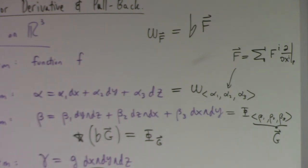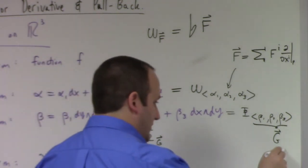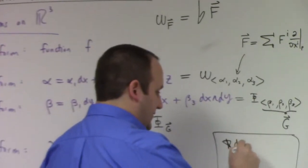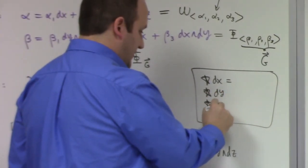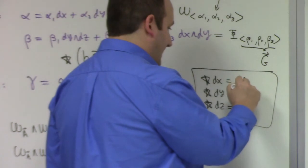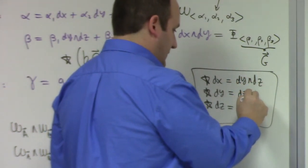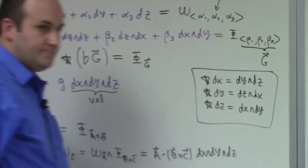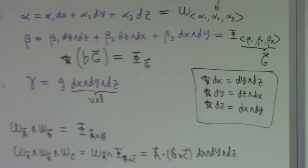How does Hodge duality work in R^3? The Hodge dual of dx is dy wedge dz, the Hodge dual of dy is dz wedge dx, and the Hodge dual of dz is dx wedge dy. If you take the Hodge dual twice with respect to the usual metric, you just get back where you started.